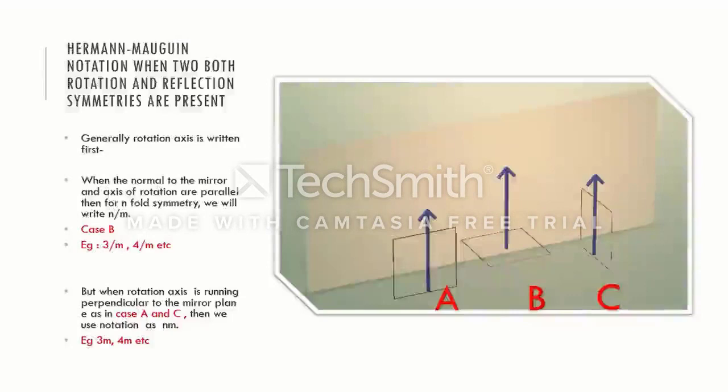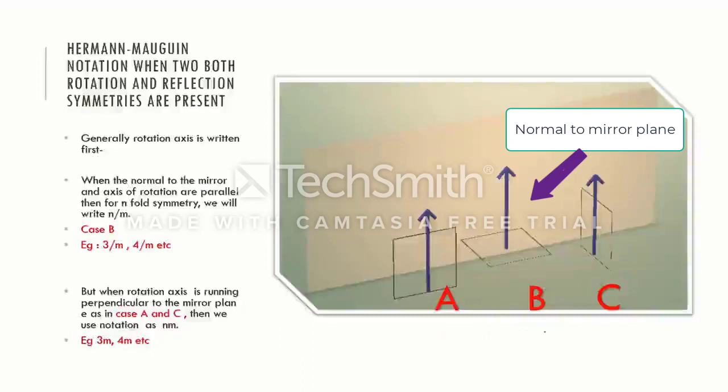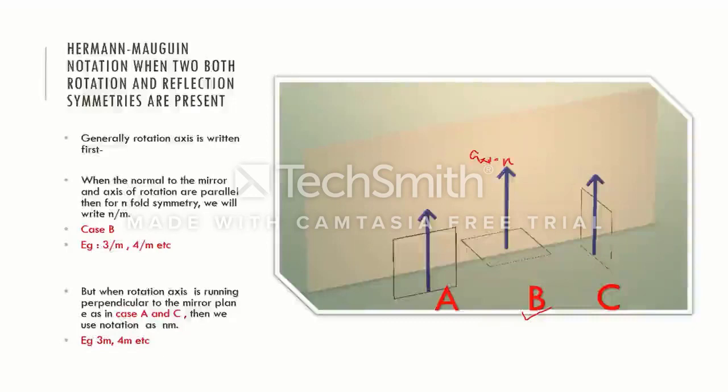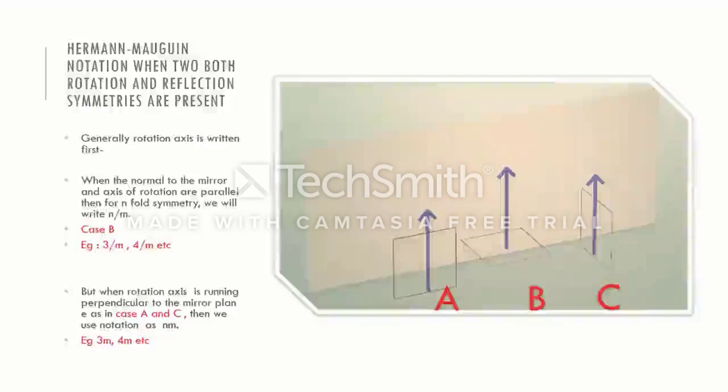So generally, the rotation axis is written first, that is, the viewing direction. When the normal to the mirror and the axis of rotation are parallel, as in case B, then for n-fold symmetry we will write n over m. For example, we write 3 over m or 4 over m, etc. But when the rotation axis is running perpendicular to the mirror plane, as in case A and case C, then we use notation as nm. For example, 3m, 4m, etc.